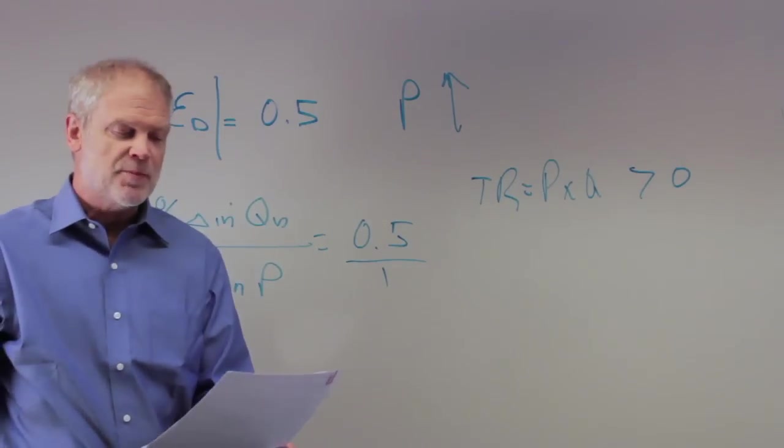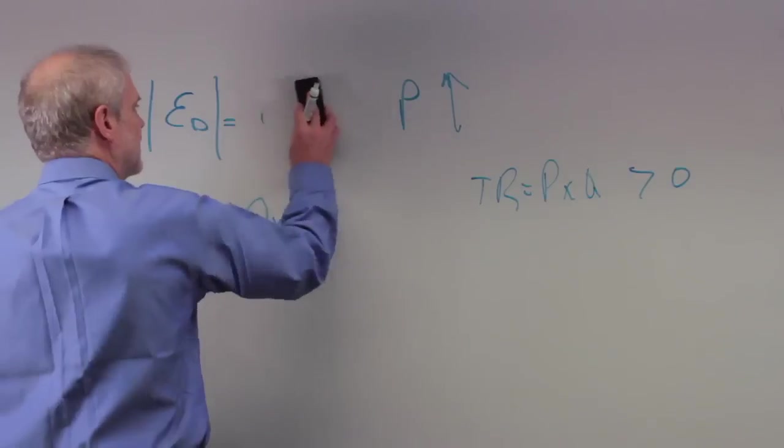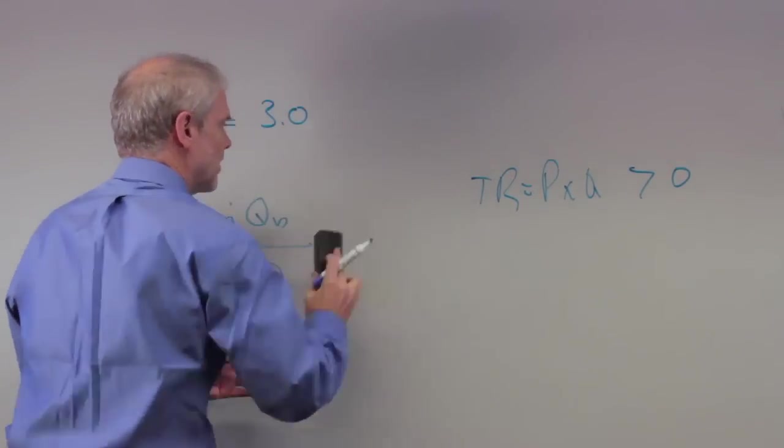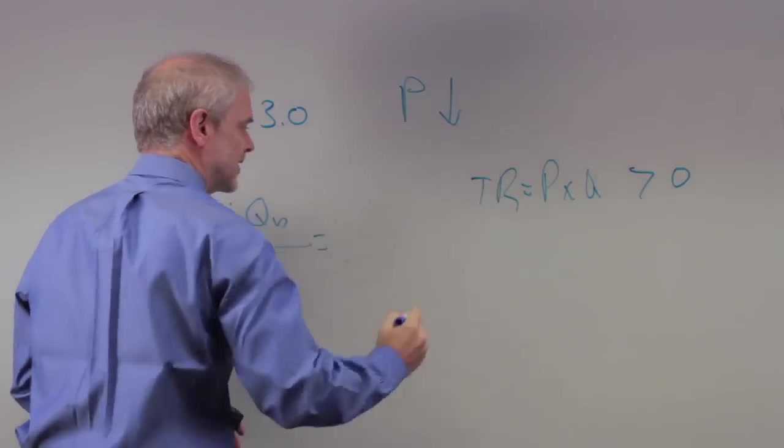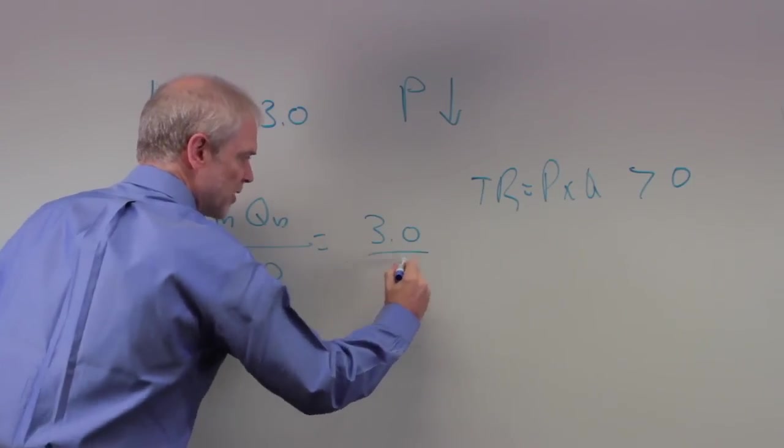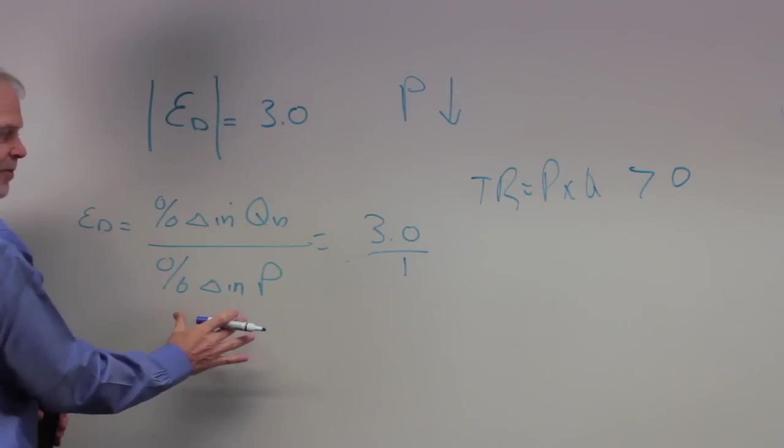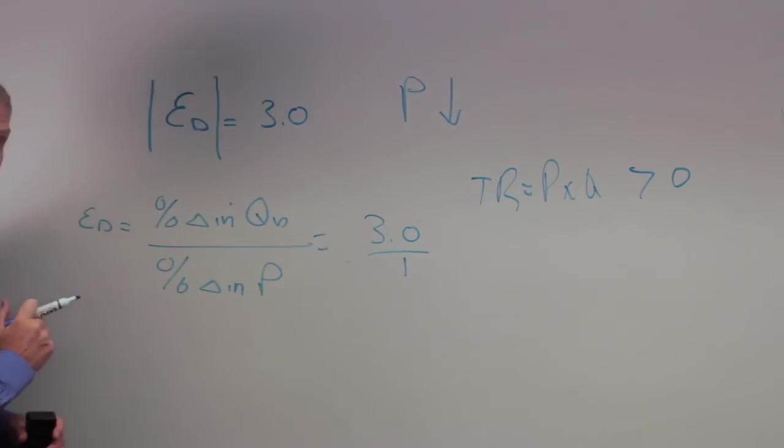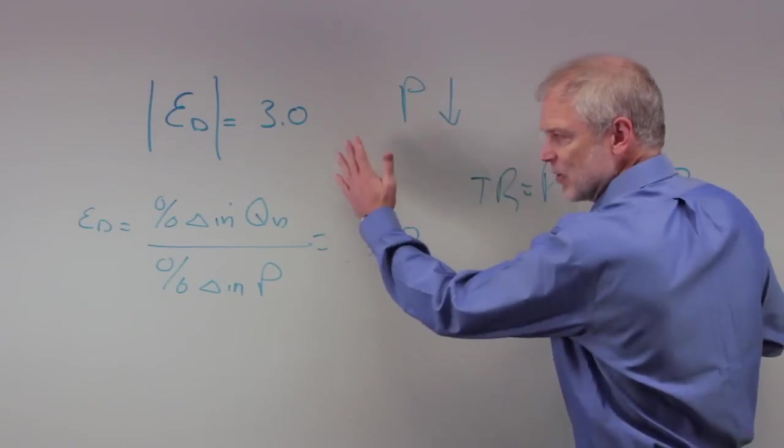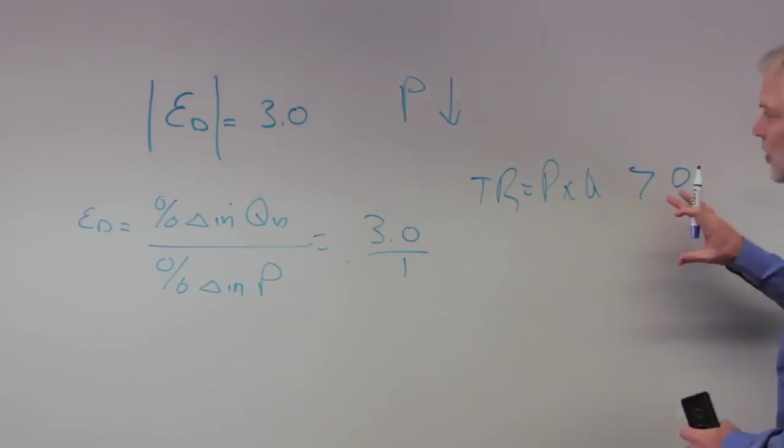It says the price elasticity of demand is 3.0, and the price of the good decreases. Let's go back, change our numbers here. Elasticity of demand is 3.0. In this case, we're going to cut price. How do I get a ratio of 3.0? It's 3.0 to 1. So now, if I decrease price in this case by 10%, quantity demanded is going to increase by a very large 30%. The relative increase in quantity demanded is going to be more than the relative decrease in price. Therefore, total revenues are going to increase.